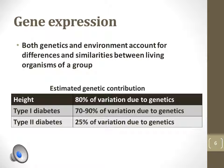The chart explains that height is 80% genetic, type 1 diabetes is roughly 90% genetic, and type 2 diabetes is roughly 25% genetic.